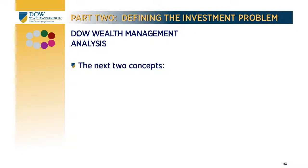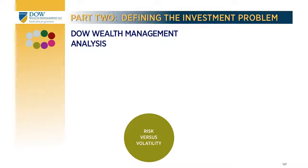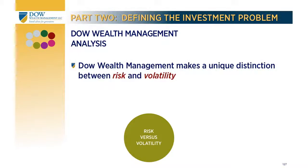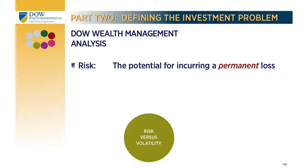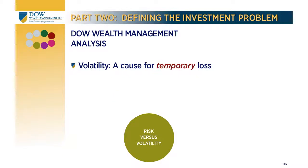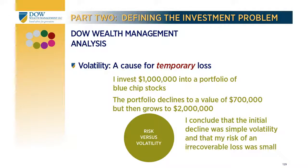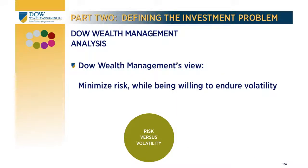There are two additional concepts important to understand when working within financial markets: risk versus volatility, and risk and reward. For our purposes, Dow Wealth Management defines risk simply as the potential for incurring a permanent loss. Suppose I invest a million dollars into a speculative hedge fund — shortly thereafter the fund goes bankrupt and I get wiped out. I'll probably conclude that I had incurred considerable risk. Volatility, on the other hand, is a cause for temporary loss. Suppose I invest a million dollars into a portfolio of blue chip stocks which declines to $700,000, but a few years later is worth $2 million — I'll probably conclude that the initial decline was simply volatility and that my risk of an irrecoverable loss was small.